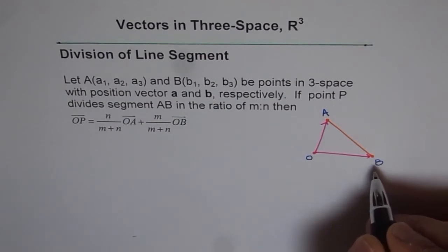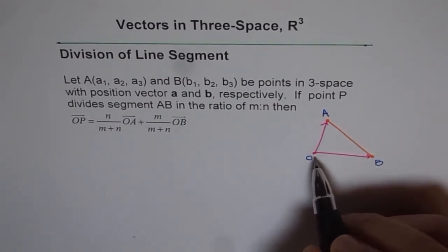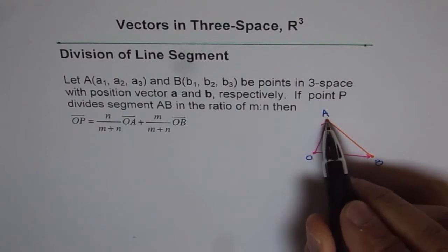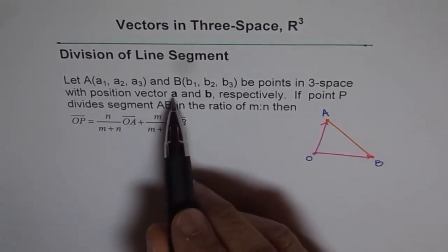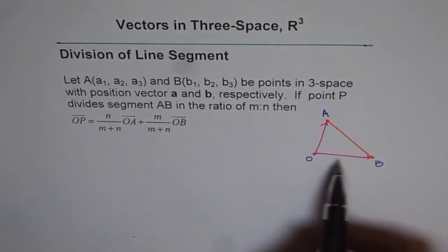So when I draw a vector from origin to the point, we get the position vector. This position vector we are referring to as a and this one as b.